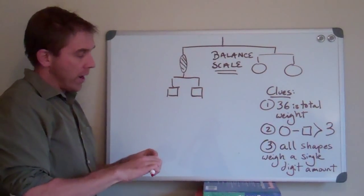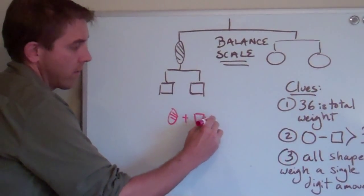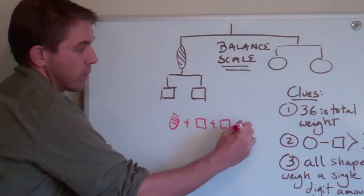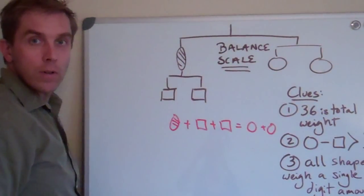What that would look like algebraically is that an oval plus a square plus a square is equal to these two circles, because this is equal, right?